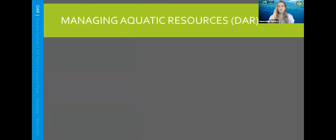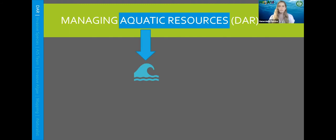Let's first start out by explaining the Division of Aquatic Resources and what we aim to do. When we say aquatic resources, what exactly are we talking about? Aquatic meaning anything that has to do with water — fresh water, brackish water, salt water — DAR kind of helps to manage it all. Resources are things that people utilize, so aquatic resources would be things that people utilize in the water space.